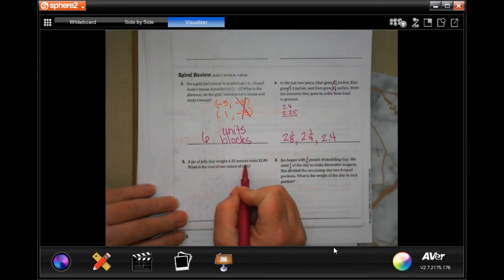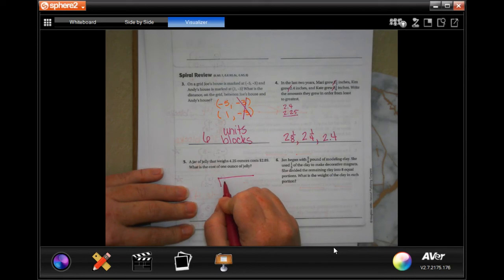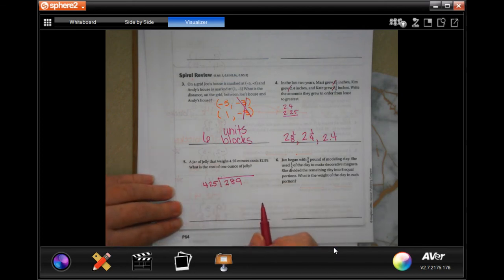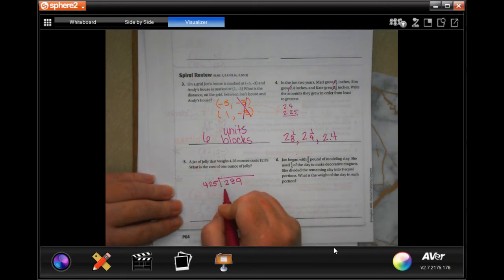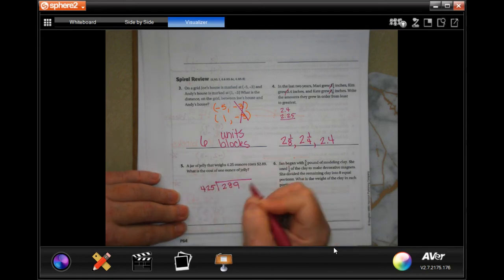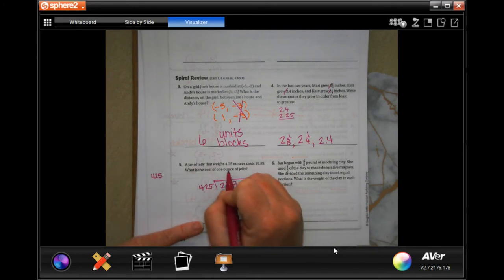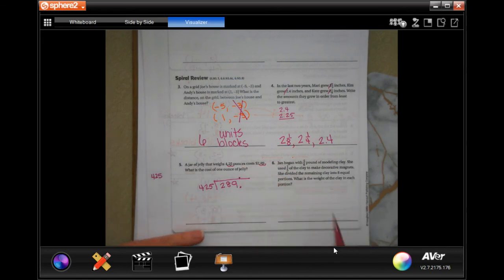A jar of jelly that weighs 4.25 ounces cost $2.99. What is the cost of one ounce of jelly? So, 2.99 divided by 4.25. I just did that backwards. We can't have a decimal outside of the box, so I went 1, 2, which made me go 1, 2, which is why I don't have any decimals here. I'm going to go ahead and put one right here, just so that I've got it. But I'm going to come over on my slide, and I'm going to write down my multiples of 425.